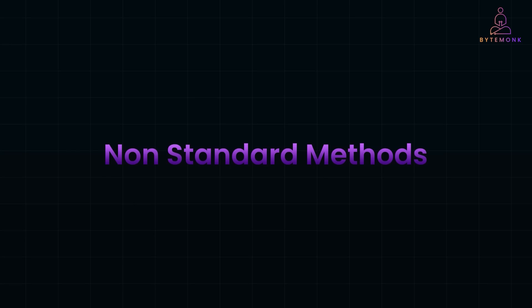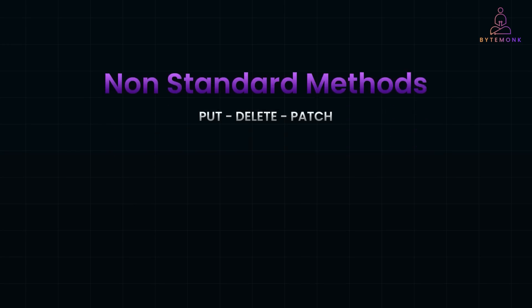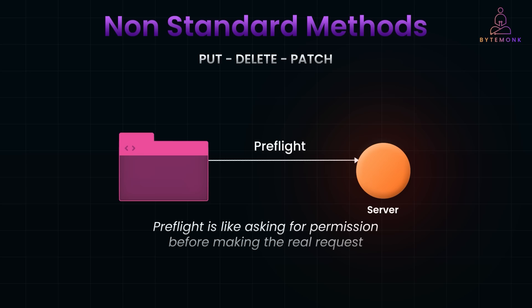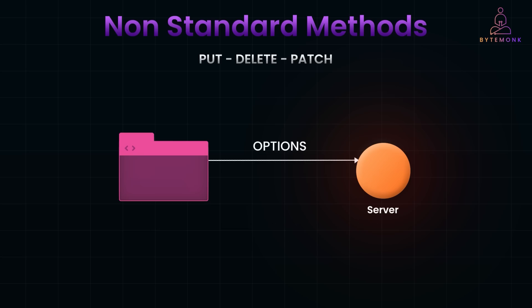If your request uses custom headers or different HTTP methods such as PUT, DELETE, PATCH, or a non-standard Content-Type, the browser sends a pre-flight request first. A pre-flight request is asking for permission before making the real request. The browser sends an OPTIONS request to check if the server allows it, and if the server responds with the right CORS headers, the actual request is sent.